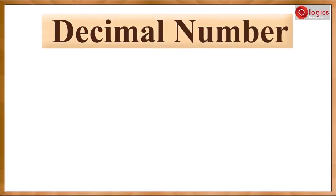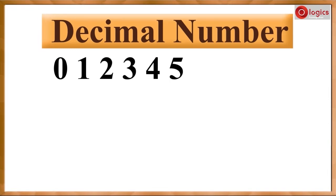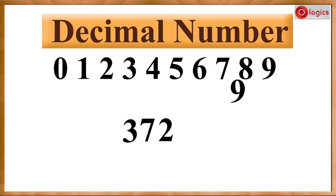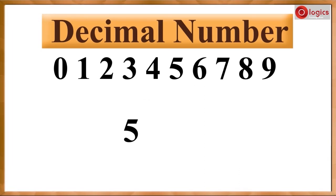Decimal numbers: the word 'deci' means ten, so zero to nine numbers are decimal numbers. The numbers which we use in day-to-day life come from the decimal numbering system. Three thousand seven hundred and twenty nine is a decimal number. Similarly, fifty-one thousand eight hundred and four is also a decimal number.